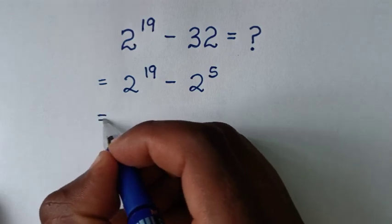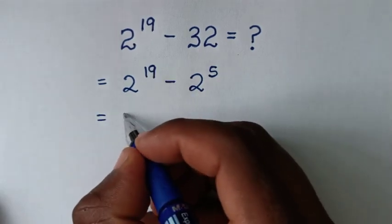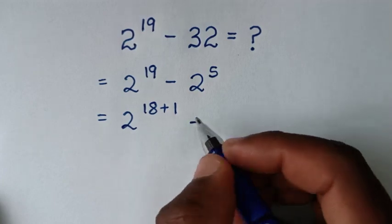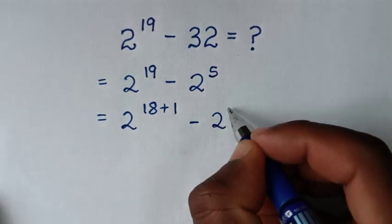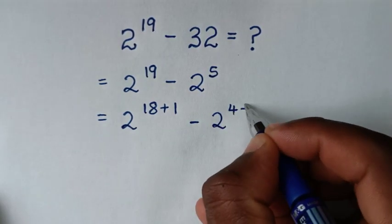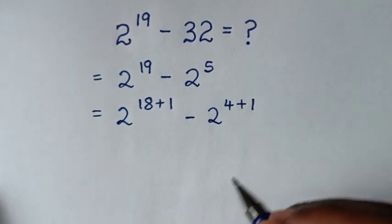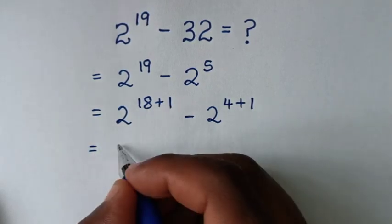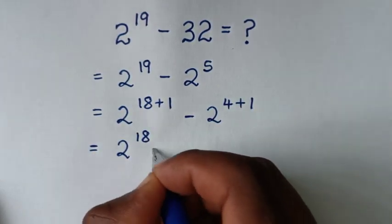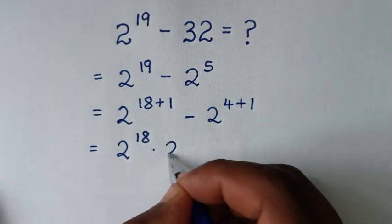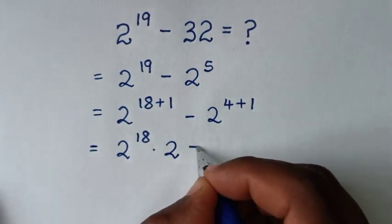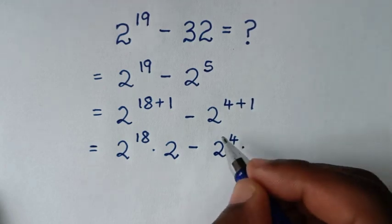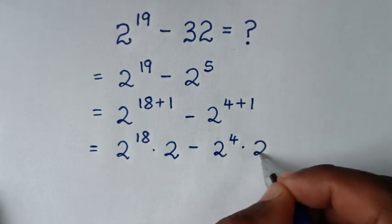Then it will be equal to 2 power of 19, which is the same as 2 power of 18 plus 1, minus 2 power of 5, which is the same as 2 power of 4 plus 1. From 2 power of 18 plus 1, that is the same as 2 power of 18 times 2 power of 1, which is 2, minus 2 power of 4 plus 1, which is the same as 2 power of 4 times 2 power of 1, which is 2.